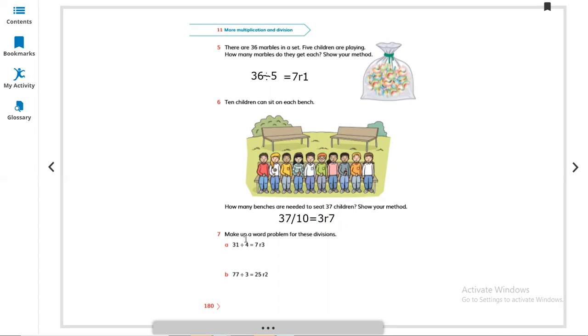Question 7: Make up a word problem for these divisions. 31 divided by 4 equals 7 remainder 3. Same like this you can make it. 77 divided by 3 equals 25 remainder 2. These are answers. The question with answers. So you are making a statement like this: There are 4 children that can sit on each bench. How many benches are needed to seat 31 children? Like this, the question you can make it.